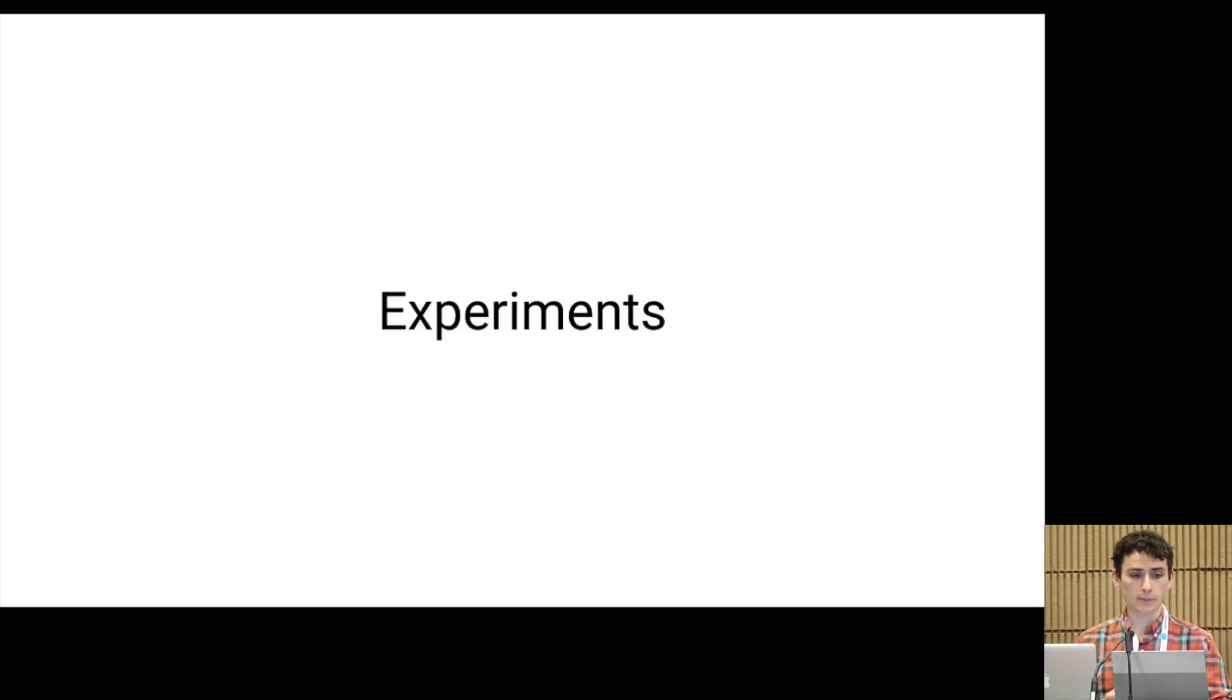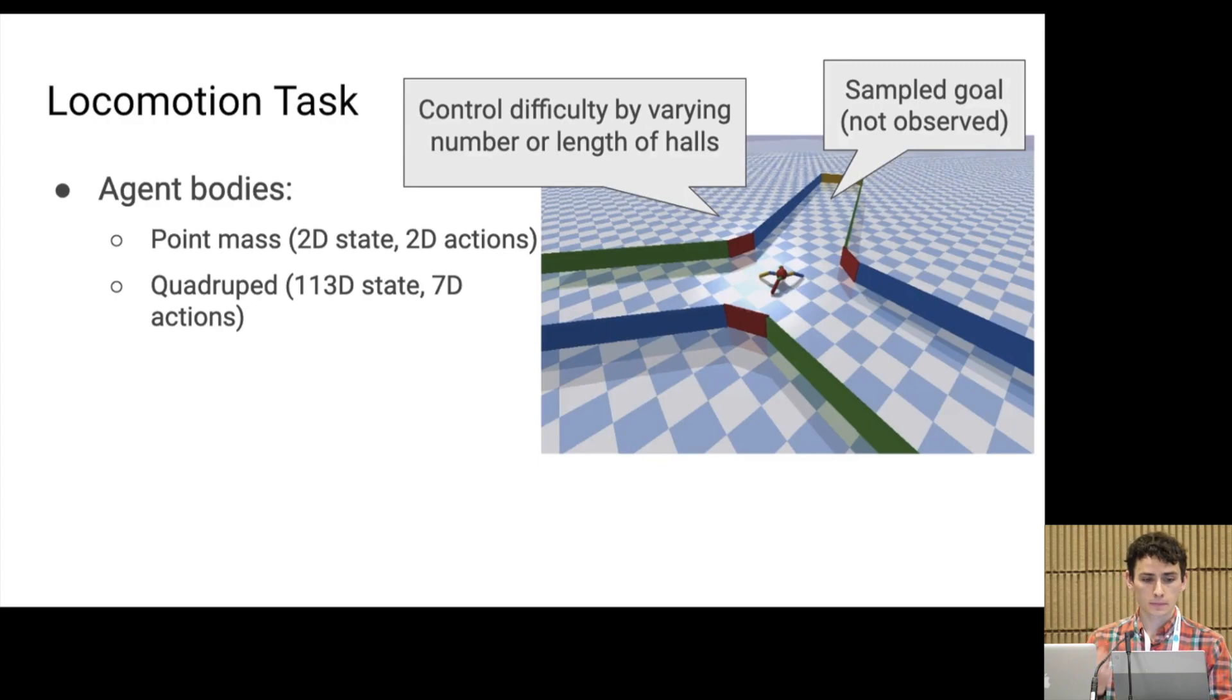Let's move on to some experiments. Our experiments will focus on two tasks, manipulation and locomotion. For the locomotion task, we're going to have an agent spawn at the center of radially extending hallways, sort of like the spokes of a wheel. We can vary the number of hallways and the length of each hallway to programmatically increase the difficulty of the exploration task. In this environment, you can run experiments both with a simple 2D point mass and with a higher dimensional quadruped robot.